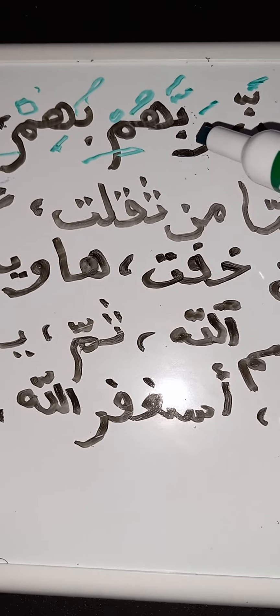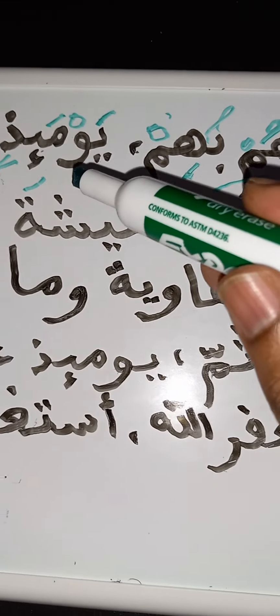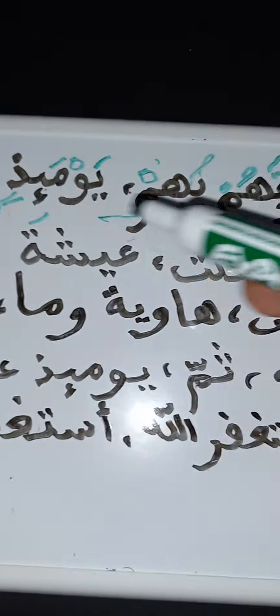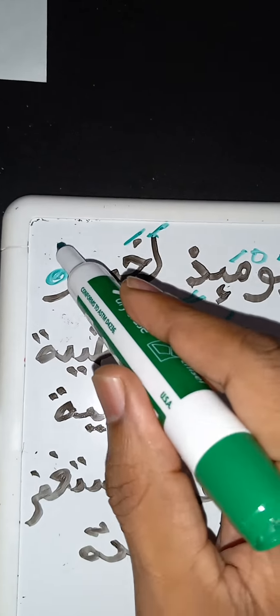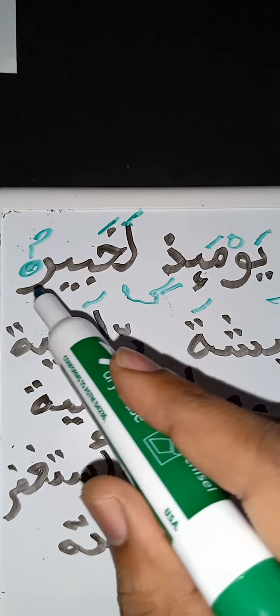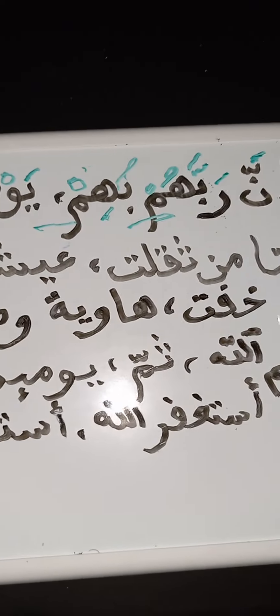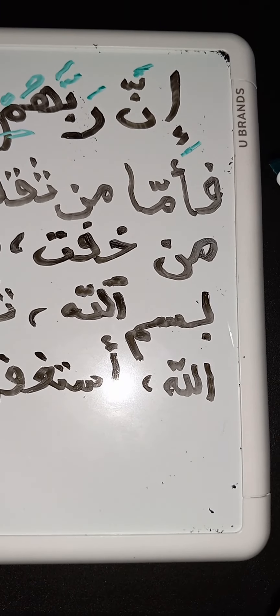'Inna rabbahum bihim yawma idhin la khabir.' The ra when we continue — remember: jisra, dammatayni — the ba came after it. But since we are stopping, it is the default act for stopping on anything other than fathatayni, which is sukun. So that is why we get 'la khabir.'